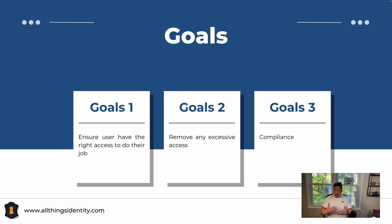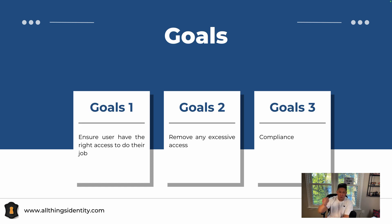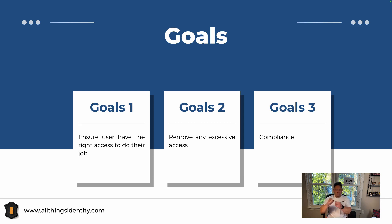A lot of times organizations would not get compliance if they don't have certifications baked into their system. If you don't have that baked into your security process or working with the GRC team — your governance, risk, and compliance team — you won't really get that compliance and you really can't do business. So goal number one is least privilege, number two is to remove excessive access, and the third one is compliance.